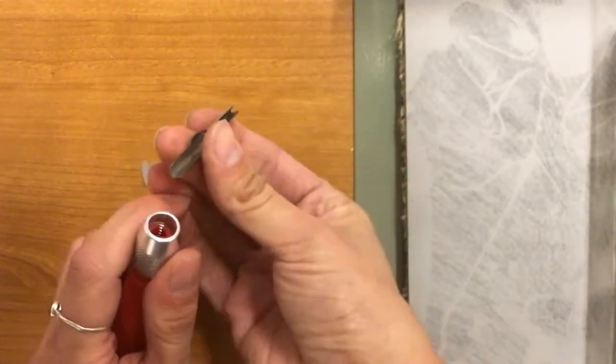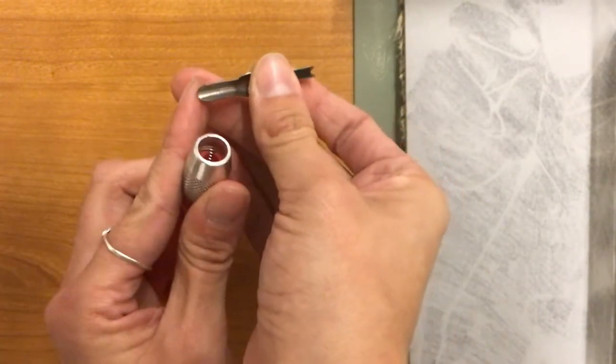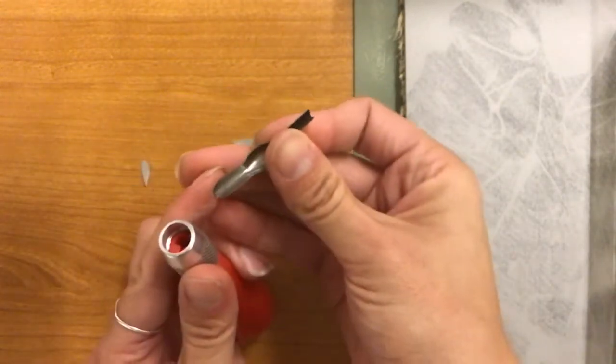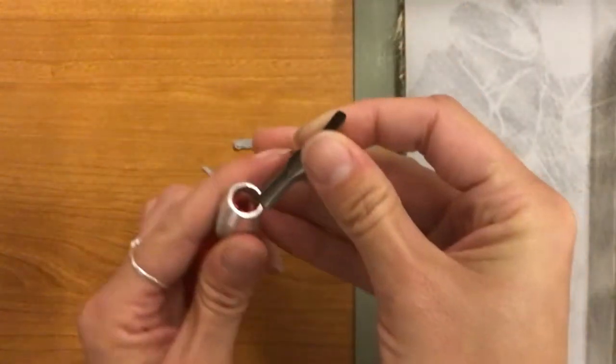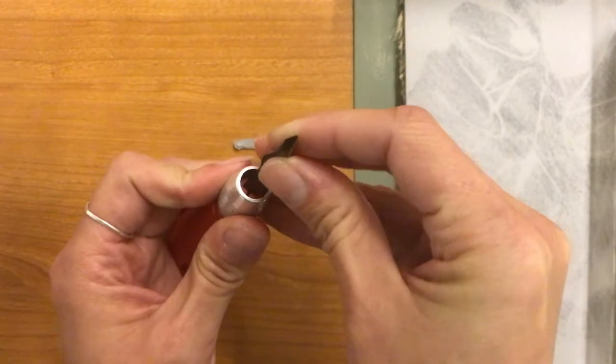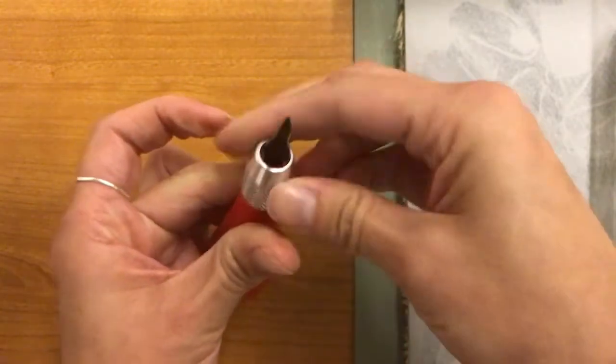This one is a number two. So just always make sure that you're putting the correct end in as well. You'll be able to see which end is not actually sharp. And then always making sure that you put it in the right direction. Squeeze that in there and then tightening it up.